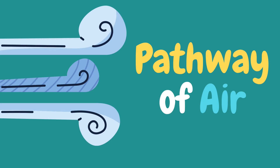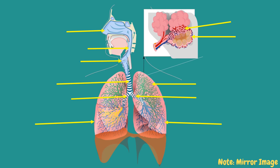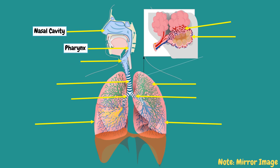To start this lesson, let's trace the pathway of air flowing from the environment towards the alveoli. The respiratory system starts at the nose and mouth and continues to the airways and the lungs. Air enters the respiratory system through the nasal cavity and passes down the throat or pharynx, and through the voice box, also known as the larynx. The entrance to the larynx is covered by a small flap of tissue called the epiglottis that automatically closes during swallowing, thus preventing food or drink from entering the airways. The windpipe or trachea is the largest airway.